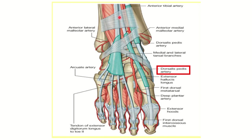Here is the superior extensor retinaculum and here is the inferior extensor retinaculum. We can see three tendons which pass beneath this extensor retinaculum: first is the tibialis anterior tendon, then extensor hallucis longus, and extensor digitorum longus. Here we can see the dorsalis pedis artery.